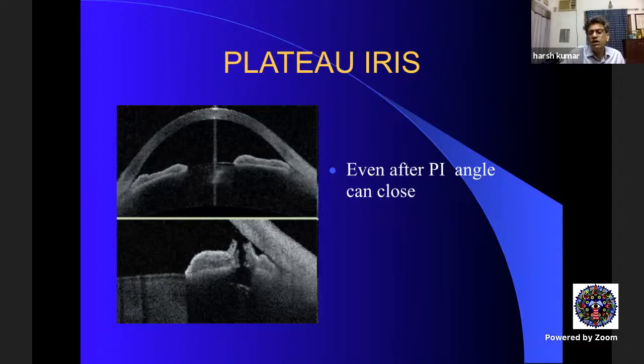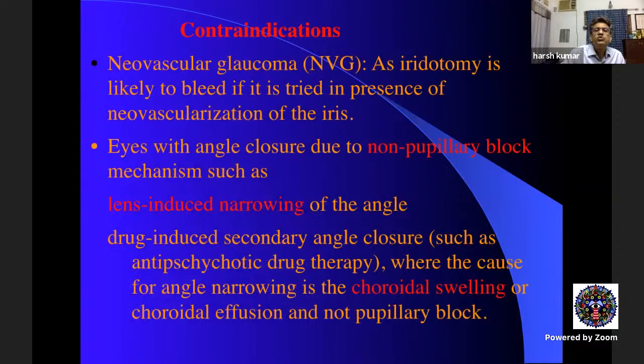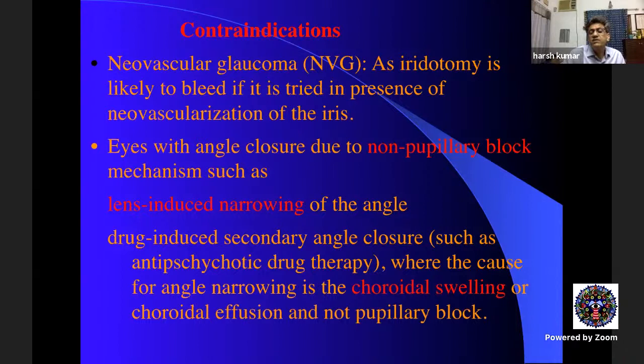Contraindications include neovascular glaucoma — it will bleed, so avoid it. Non-pupillary block mechanisms do not warrant PI. Topiramate-induced bilateral acute angle-closure, typically in young myopic males on antidepressants, is caused by choroidal swelling — PI will not help. Similarly, lens-induced angle narrowing does not require peripheral iridotomy. Be careful about these distinctions.